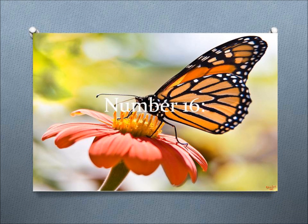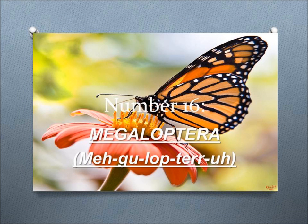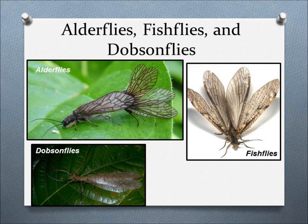Number 16, Megaloptera. This order includes alderflies, fishflies, and dobsonflies, insects found in a variety of freshwater habitats. The adults are winged and terrestrial, while the larvae live in ponds, lakes, streams, and swamps, and eat whatever they can.